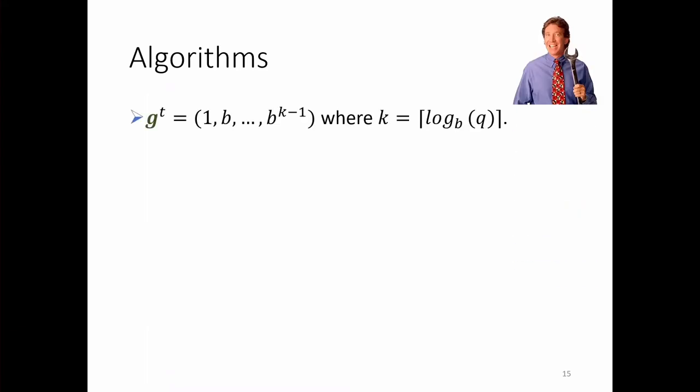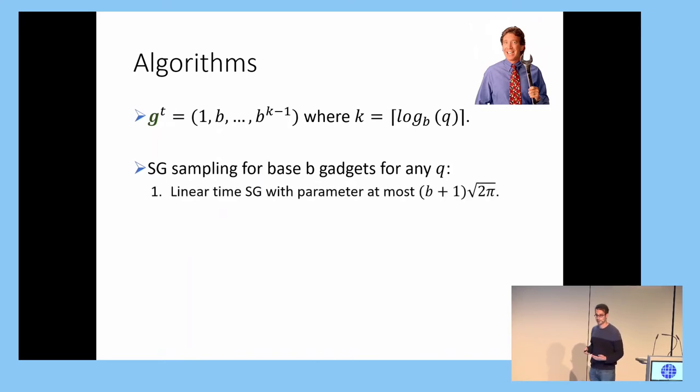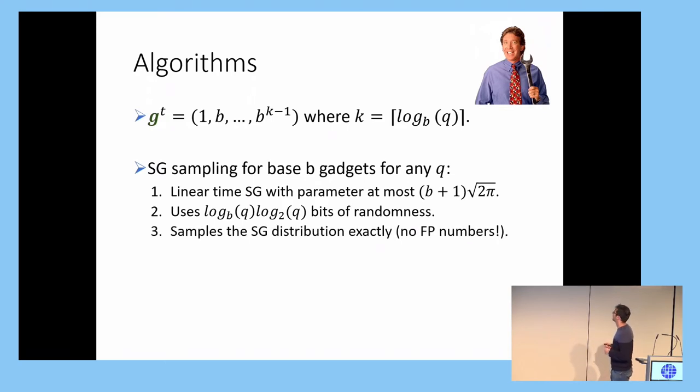So the first algorithms in our toolkit. For these power of B gadgets, we have an efficient linear time and space sub-Gaussian sampling algorithm, or bit decomposition. And the sub-Gaussian width is this B plus 1 times square root of 2 pi. It's important to note here that when Q is a power of B, this plus 1 gets changed to a minus 1. And also, when B is a power of B, the randomness used is just log 2 of Q. But arbitrary Q, we have a trade-off between the randomness needed to sample distribution and how wide the distribution is. So sometimes, in implementations, we'll use a large base, like square root of Q. Then the random bits needed are just 2 log Q. Or if you want a small distribution, you can have a small base, which is 2, and then you have log Q squared bits of randomness. And another important point is that our algorithm sample this distribution exactly, so there's no use of floating point numbers.